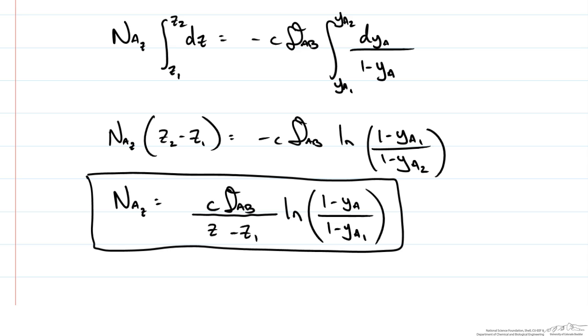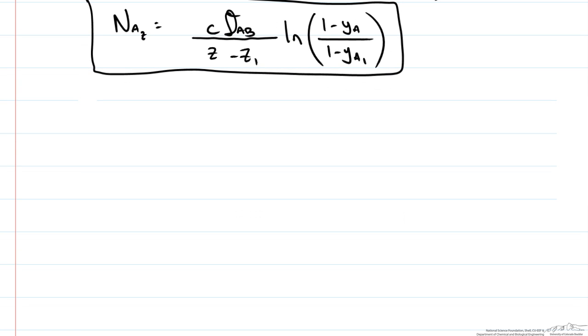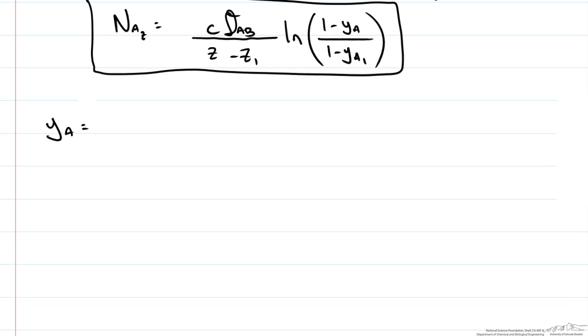Now it may be of interest to plot the mole composition YA as a function of position Z. We can just rewrite this equation looking at YA as a function of Z, and we get 1 minus (1 minus YA1) times the exponential of our flux times our film thickness over our concentration and our diffusivity.